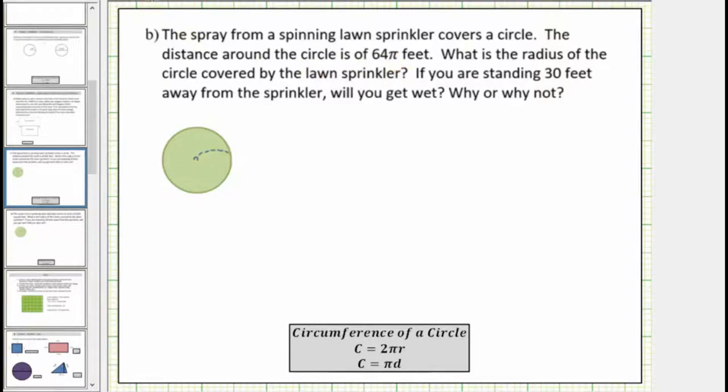So this is a sprinkler and this is the circle. We know the distance around the circle, which is called the circumference, is 64π feet. Let's label this as C for circumference equals 64π feet.